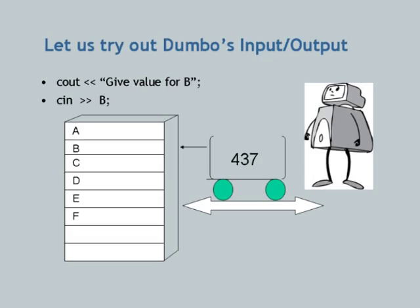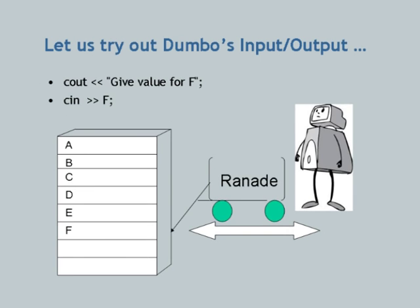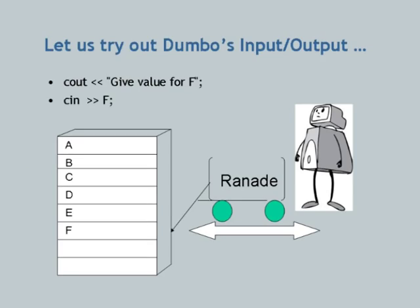Let us try Dumbo's input and output. 'Give value for B' — 'cin >> B', so some value 437. 'Give value for F' — 'cin >> F'. Notice the use of a string prompt. Since I have a keyboard and monitor to interact with Dumbo, if a cursor is waiting for me, I would not know which value to give without a prompt. So it is useful for the program to output 'Give value for F', and then the input — let's say string 'Ranade' — goes into F.